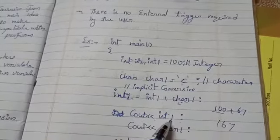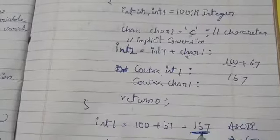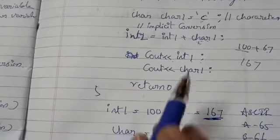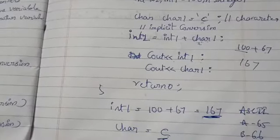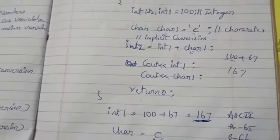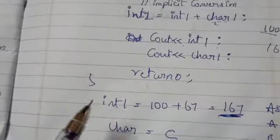If you print that int1, we will get 167. If you print the character 1, what the value is in the single quotation, we will give as 1, capital C. We will get capital C. That is the output of this program.